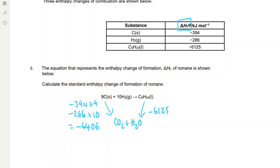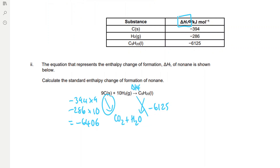To find the enthalpy change of formation — the top arrow — we need to go with the first arrow on the left and against the arrow on the right. That means we keep the sign of the left arrow, giving minus 6406, and we flip the sign of the right arrow to positive 6125. So the enthalpy change of formation is minus 6406 plus 6125, which equals minus 281 kJ/mol.